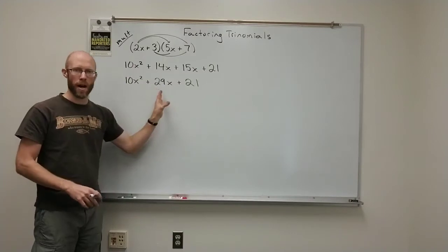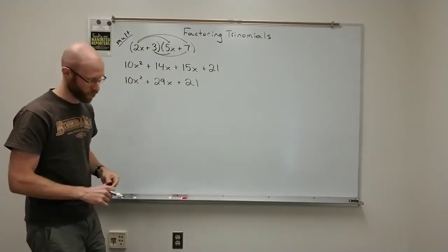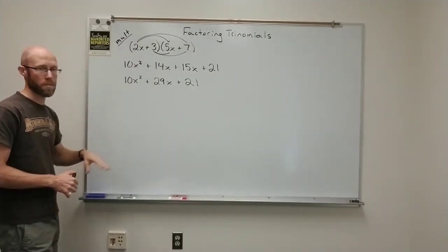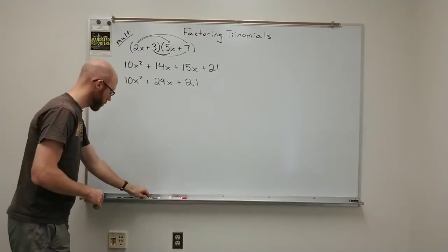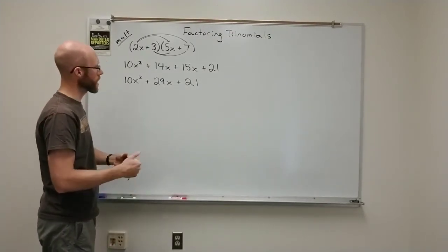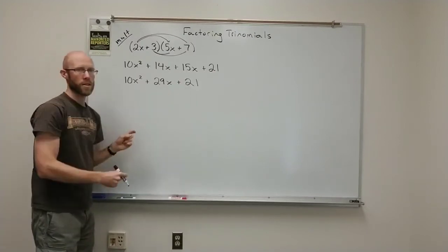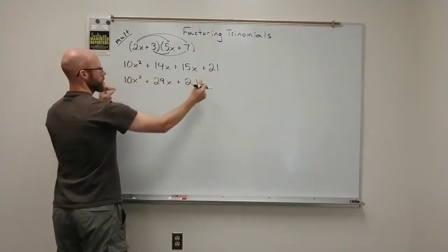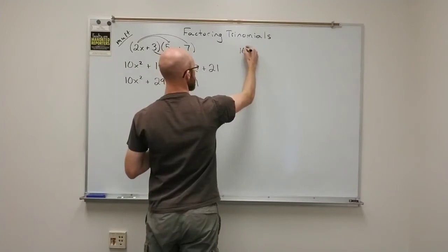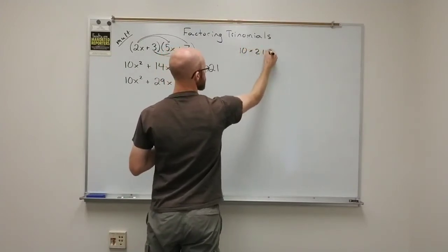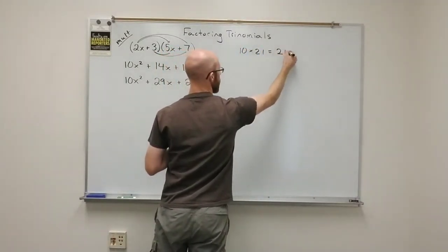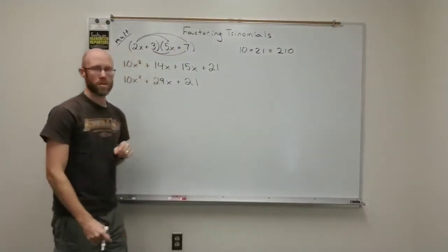However, there's some interesting patterns. One really interesting pattern is some of the products that are up here. If you were to multiply together the 10 and the 21, 10 times 21 is 210.